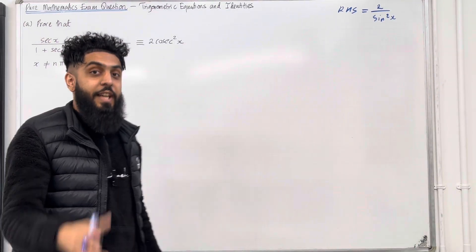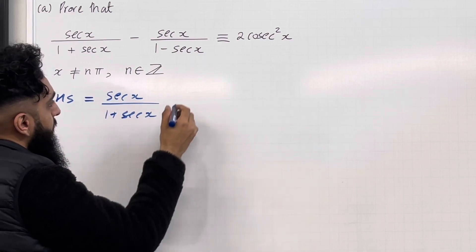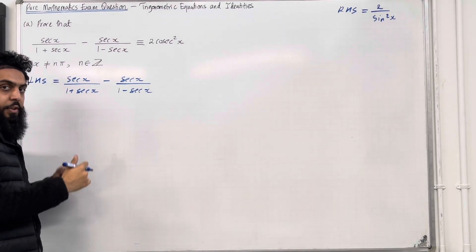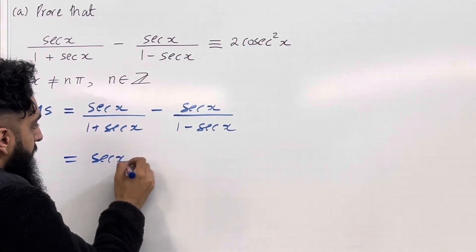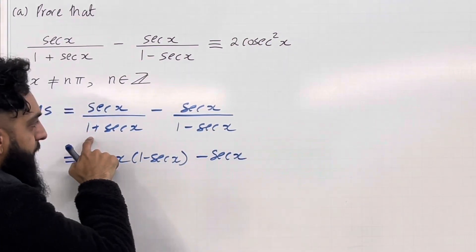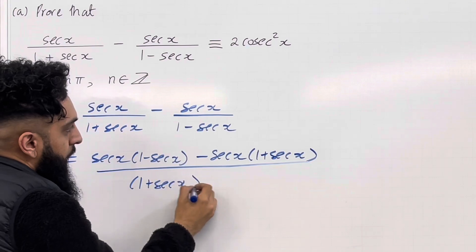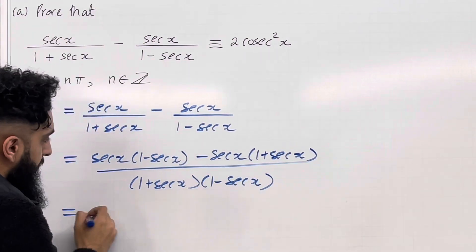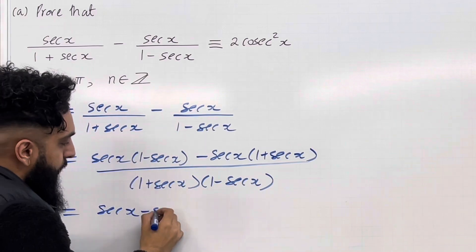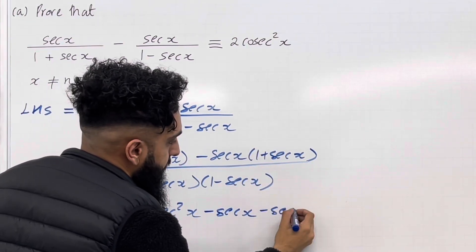Let's have a look at the solution to part A. Starting with the left hand side: sec x over 1 plus sec x, minus sec x over 1 minus sec x. The first step is to combine the fractions using cross multiplication. So I've got sec x multiplied by 1 minus sec x, minus sec x multiplied by 1 plus sec x, all over 1 plus sec x multiplied by 1 minus sec x. Expanding the brackets in the numerator, I get sec x minus sec squared x, minus sec x minus sec squared x.